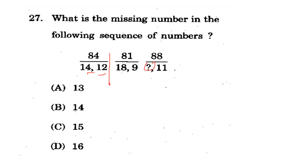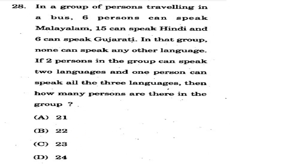Question 27 involves a calculation. The options are 13, 14, 15, and 16. The correct answer is option D - 16. The calculation details are shown on screen; we will cover the method in the course.